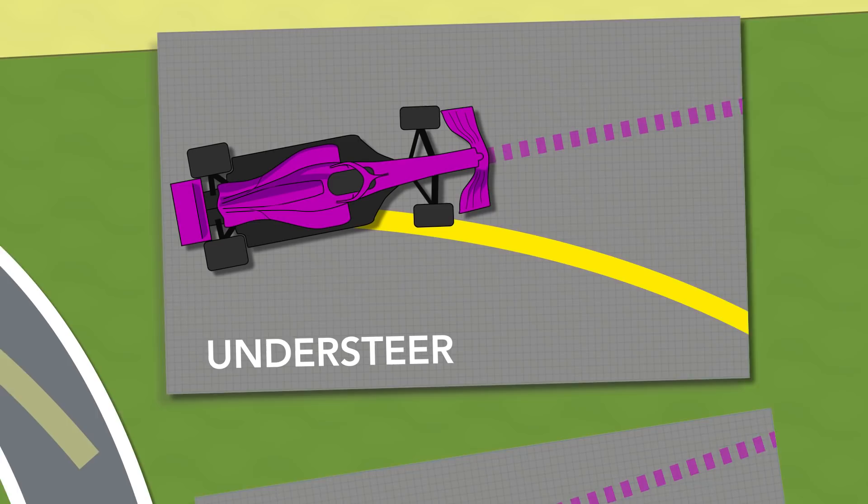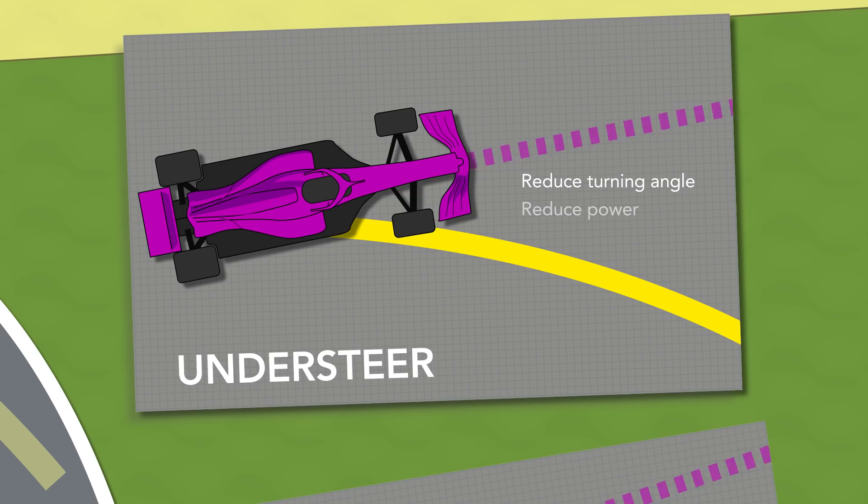To fight back against understeer the driver might want to start steering a little bit less to give the tyres a turning angle they won't slip against. It also helps to try and slow the car down and come on the power a little bit later. This results in a wider line out of the corner and a slower speed.